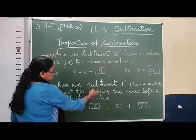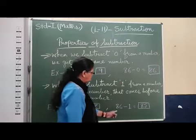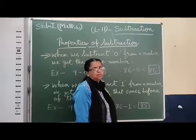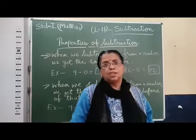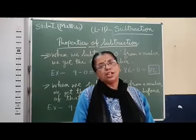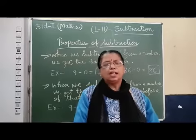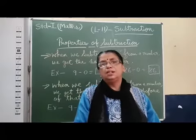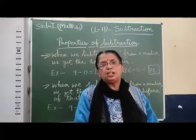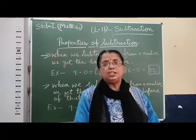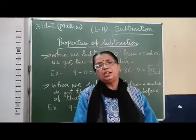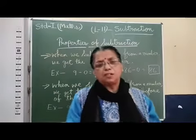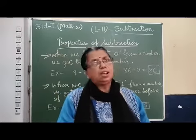Before nine, which number comes? Eight. So see here, the result changes to eight. Same example: eighty-six minus one — before eighty-six, which number comes? Eighty-five. If I take one thousand minus one, which number will come? Nine hundred ninety-nine. If I take one hundred minus one: ninety-nine — the before number. If I take thirty minus one: twenty-nine. If I take seventy minus one: sixty-nine — the before number. These two properties or facts you have to always remember while doing subtraction.